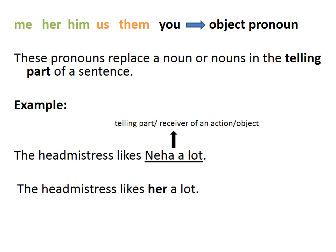The second type is object pronoun: me, her, him, us, them, you. All these come under object pronouns. These pronouns replace a noun or nouns in the telling part of a sentence. The telling part is also called the receiver of an action, or the object. See the example: 'The headmistress likes Neha a lot.' Here, the headmistress is the subject, 'likes' is the verb, so Neha is the receiver of the action.